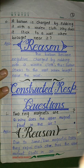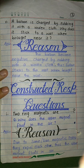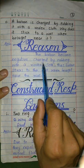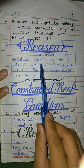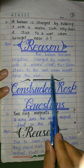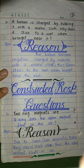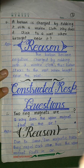A balloon is charged by rubbing it with a woolen cloth — why does it stick to a wall when brought near it? The balloon becomes negatively charged by rubbing with a woolen cloth. This negative charge on the balloon creates an attraction with the wall, causing it to stick.